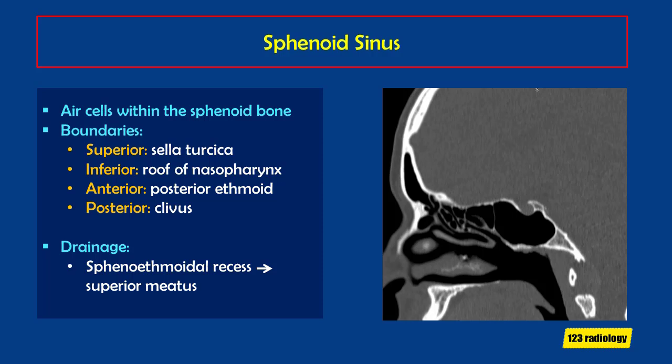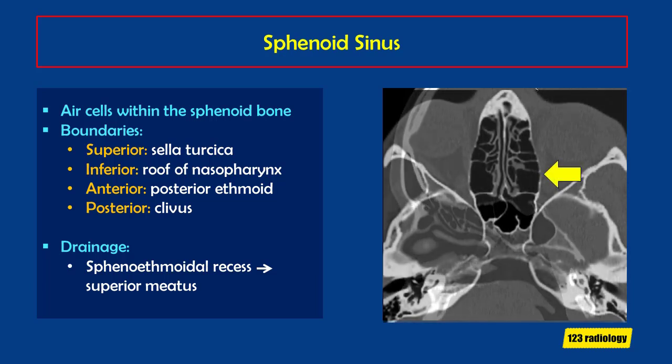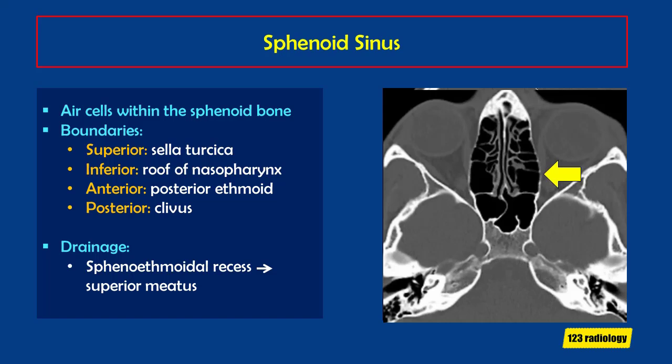The sphenoid sinus is the air cell within the sphenoid bone. It is bounded superiorly by the sella turcica, inferiorly by the roof of the nasopharynx, anteriorly by the posterior ethmoid air cells, and posteriorly by the clivus. It drains to the superior meatus via the sphenoethmoidal recess.